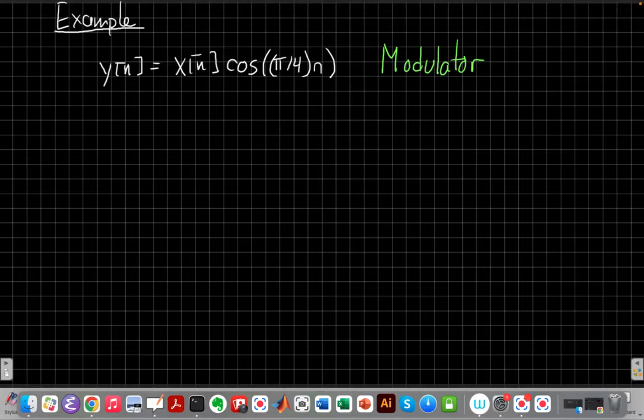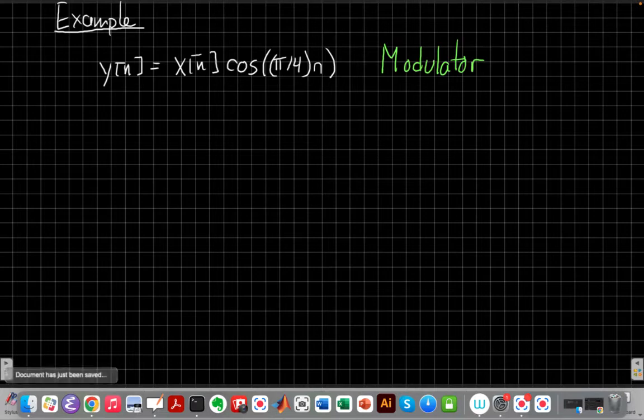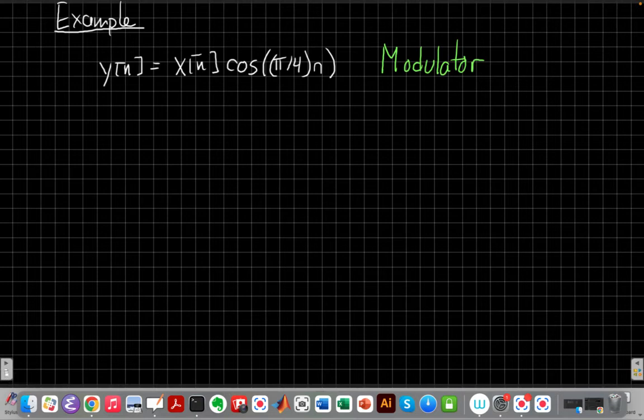And we'll see later this semester this has special properties that we use in a lot of systems, particularly systems of this form help us shift signals in frequency. But don't worry about where that comes from yet. For now it's just a convenient example.